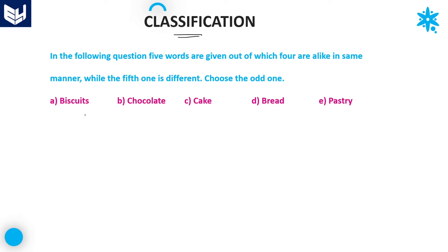The first question in word classification. As we already know, classification means among the five options given, one option is the odd one — it is not following the same pattern as that of the remaining four. We have to identify that one which does not belong to the same category.